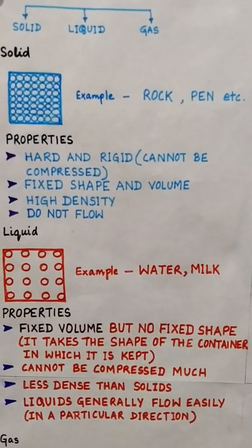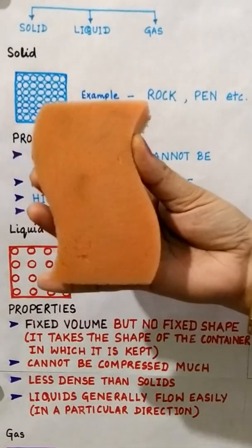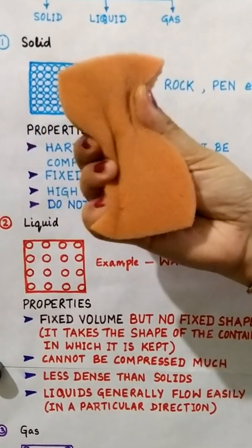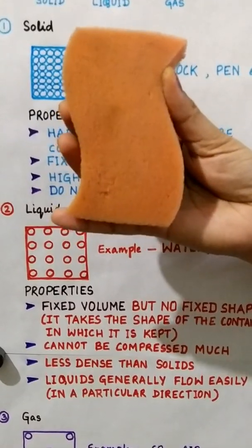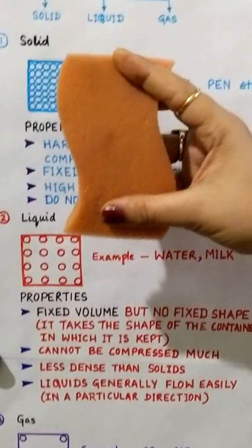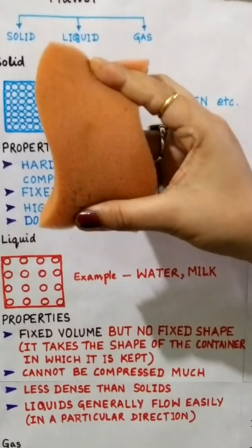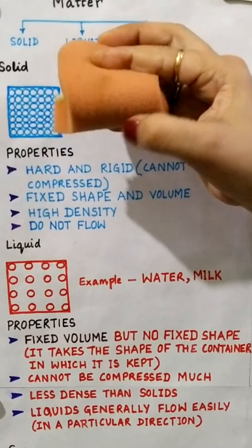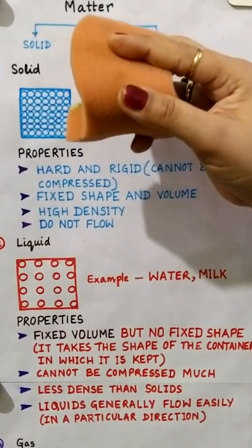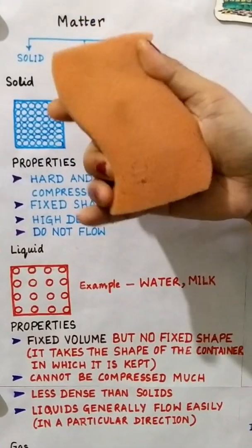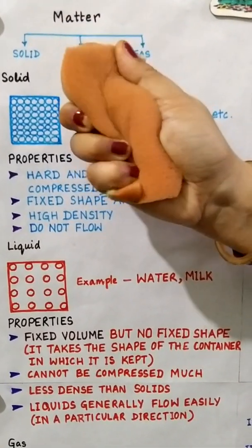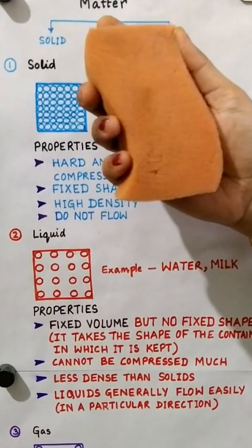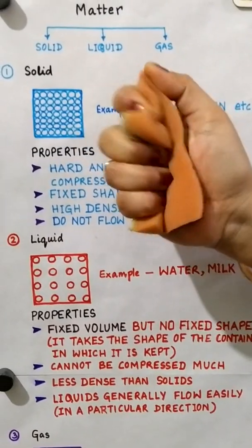We have an exception here. I can take the example of sponge, which is also considered to be a solid, but if I apply force on it, it can be compressed. This is because substances like sponge have minute pores in them. Air is trapped between these pores and when you apply force, the air expels out, and so the shape of it can be changed — it can be compressed.